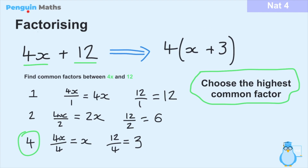To recap the process of factorising: when we have an expression like this, we think of all the common factors between 4x and 12, list them out, then choose the highest common factor. The highest common factor goes outside the bracket. Inside the bracket we divide each term by the common factor — so 4x divided by 4 gives us x, and 12 divided by 4 gives us 3. We'll now do a few more examples to improve our understanding of this process.